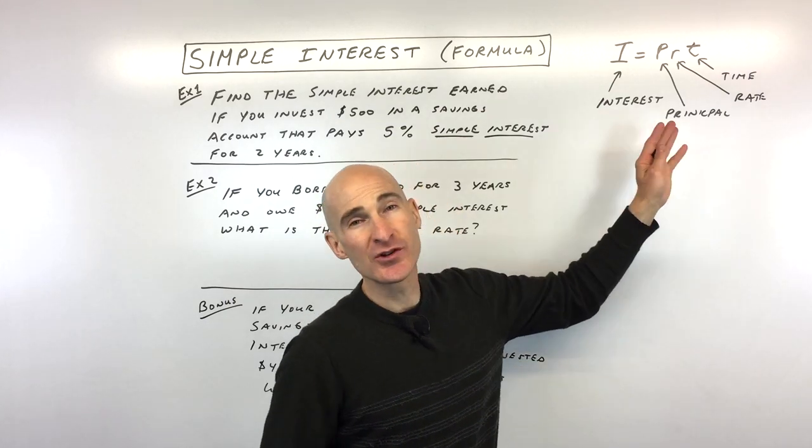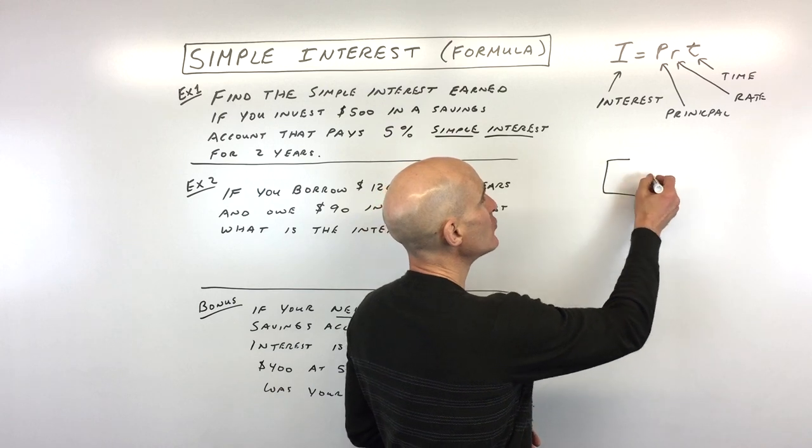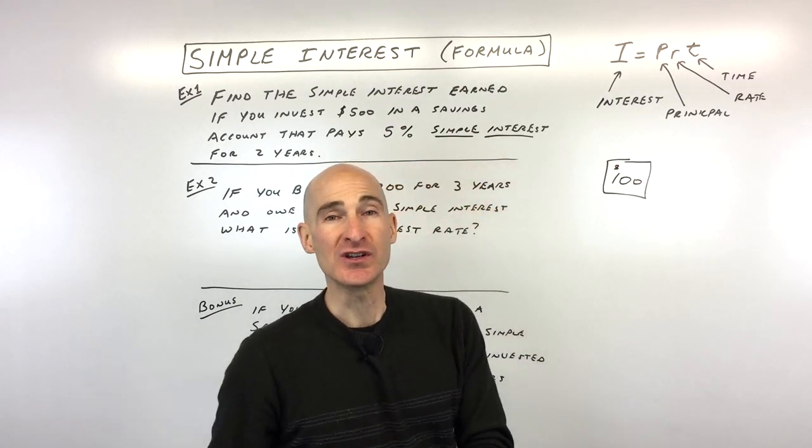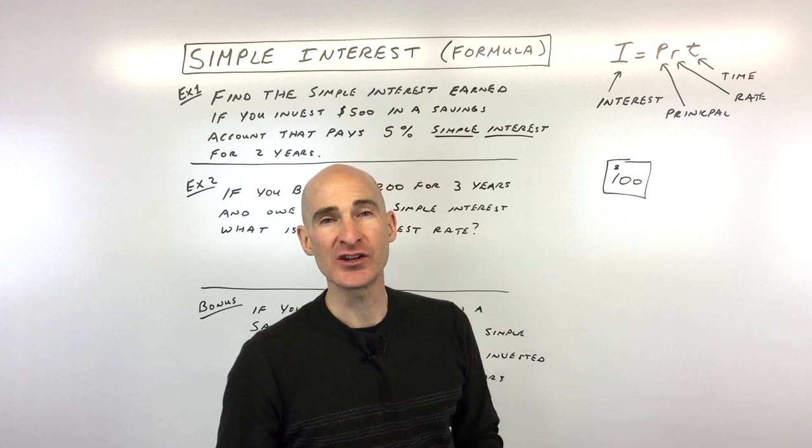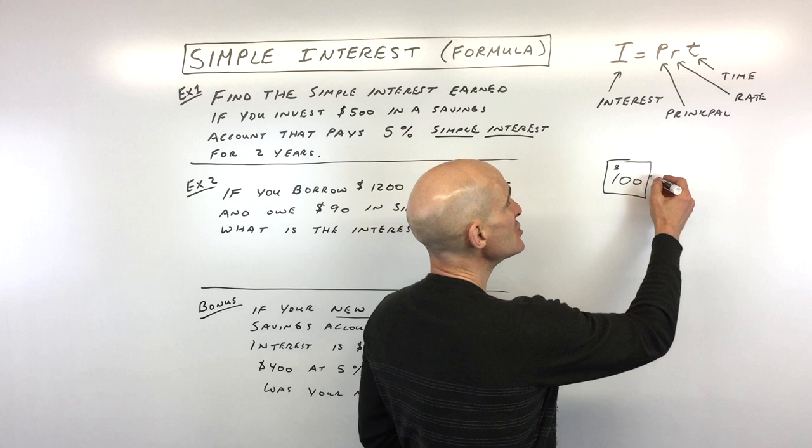The difference between simple interest and compound interest can be illustrated like this. Say, for example, you invest $100 at simple interest over a number of years, and the interest you're getting each year is 1%. That means each year